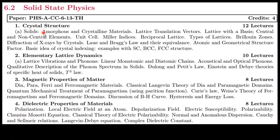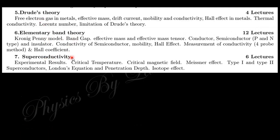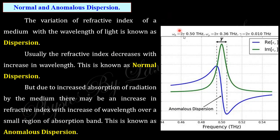This is the syllabus of the University of Calcutta sixth semester solid state physics. The portions on crystal structure, elementary lattice dynamics, magnetic properties, and the classical theory of dielectric polarizability have already been discussed. Links to previous lectures are given in the description box. Today we cover normal and anomalous dispersion, Cauchy and Sellmeier relations. Upcoming sessions will address Drude's theory, elementary band theory, and superconductivity.